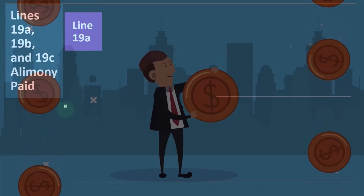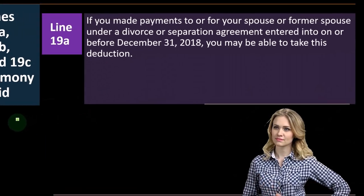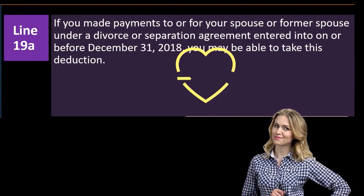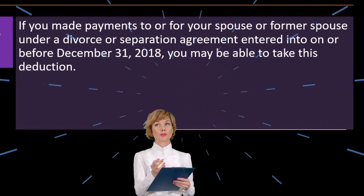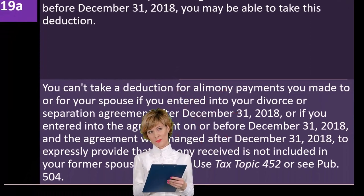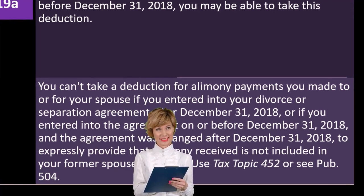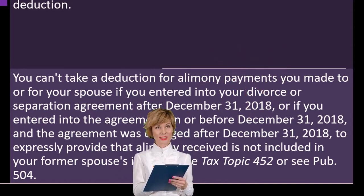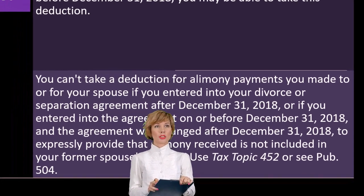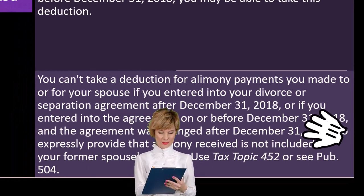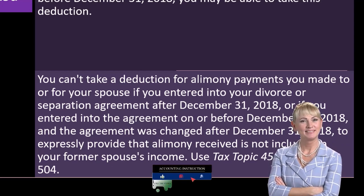Lines 19a, 19b, and 19c cover alimony paid. If you made payments to or for your spouse or former spouse under a divorce or separation agreement entered into on or before December 31st, 2018, you may be able to take this deduction. You cannot take the deduction if the agreement was entered into after December 31st, 2018, or if the agreement was changed after that date to expressly provide that alimony received is not included in your former spouse's income. See Tax Topic 452 or Publication 504.